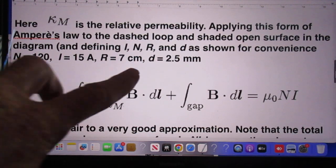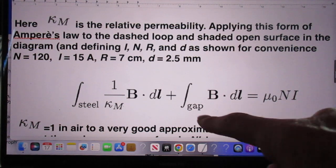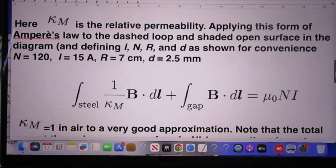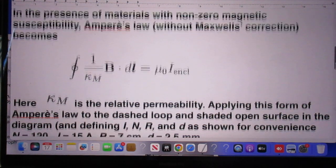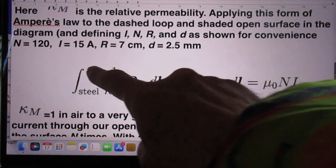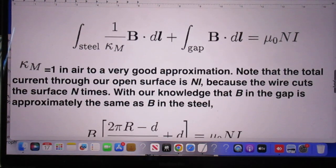So now Ampere's law has two parts. One part which is the steel, which has a kappa M of 2500 and then the gap for which kappa M is very close to 1, it's about the same in air as it is in vacuum. So this is rewriting of this Ampere's law taking into account that there is a steel part and that there is a gap part in air. Kappa M in air is 1 to a very good approximation. Note that the total current through our open surface is NI because the wire cuts the surface N times.